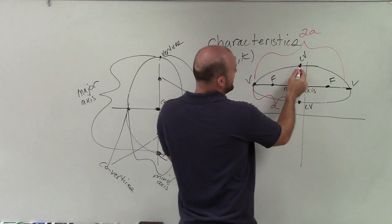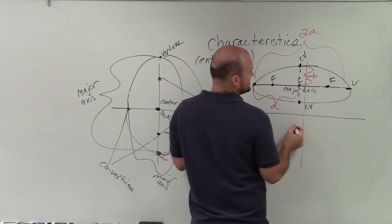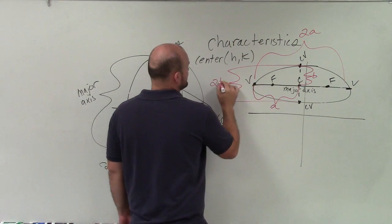The distance from my co-vertice, my center to my co-vertice, is going to be a distance of b, where the distance of my whole minor axis is 2b.